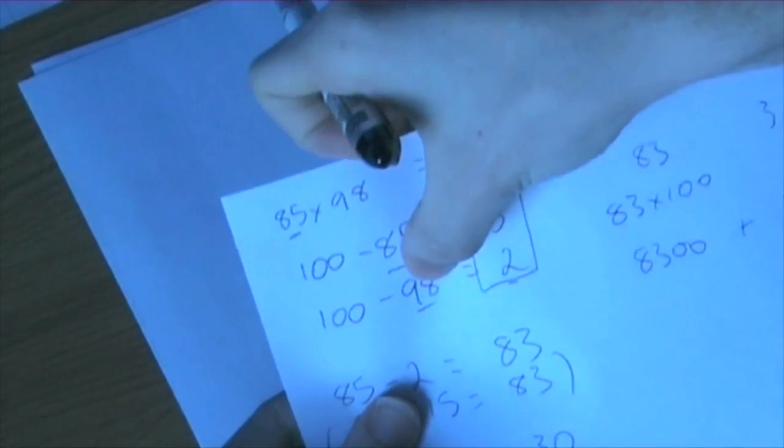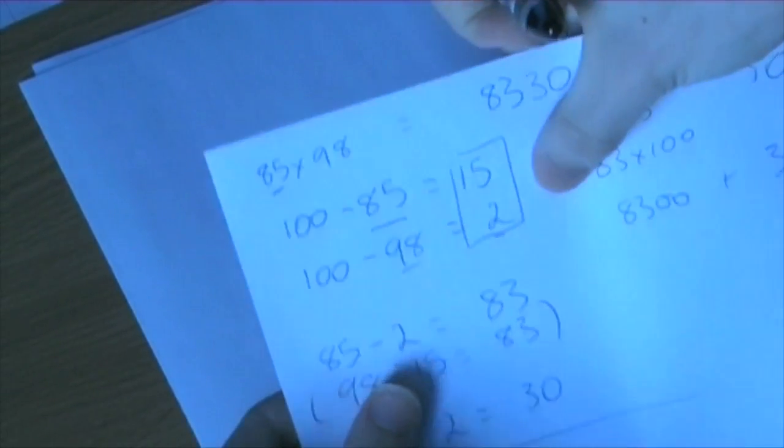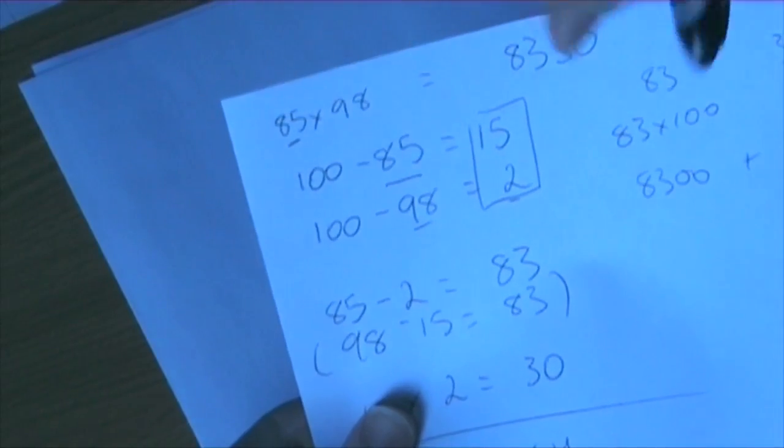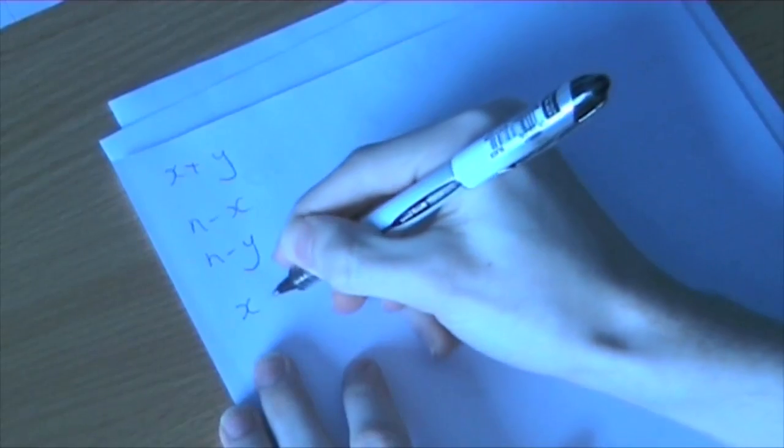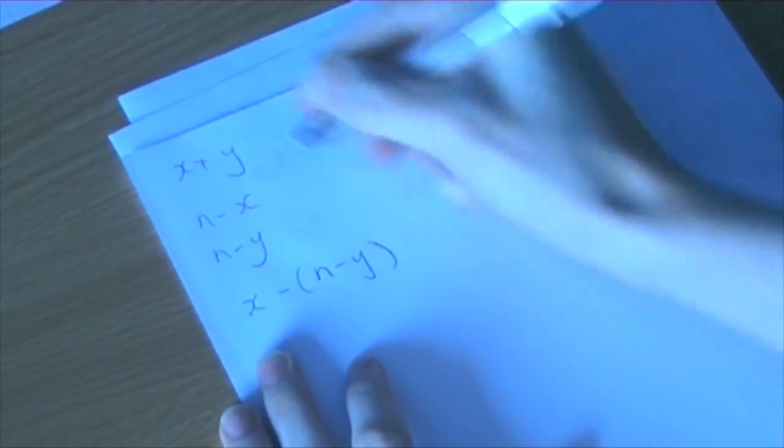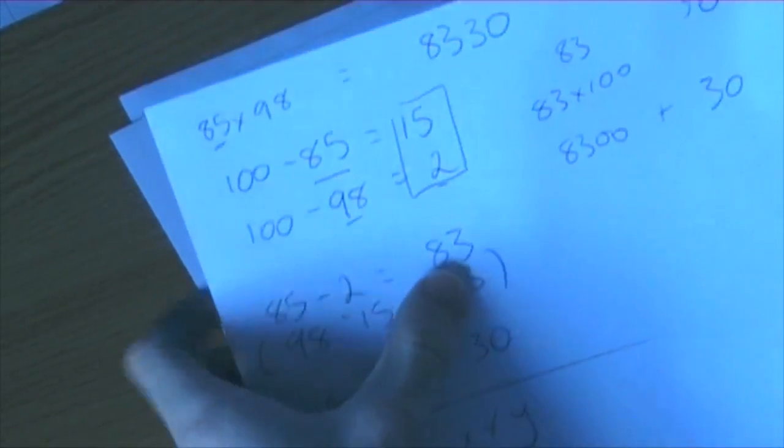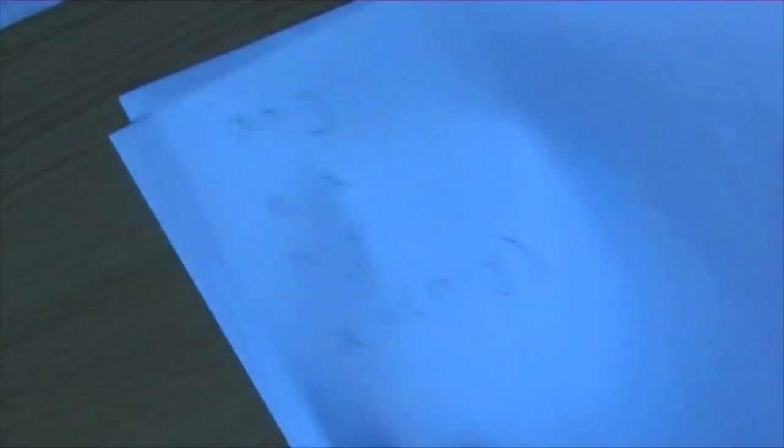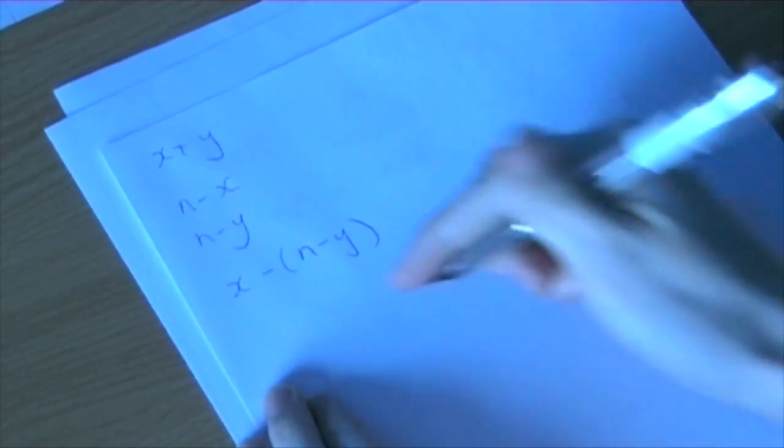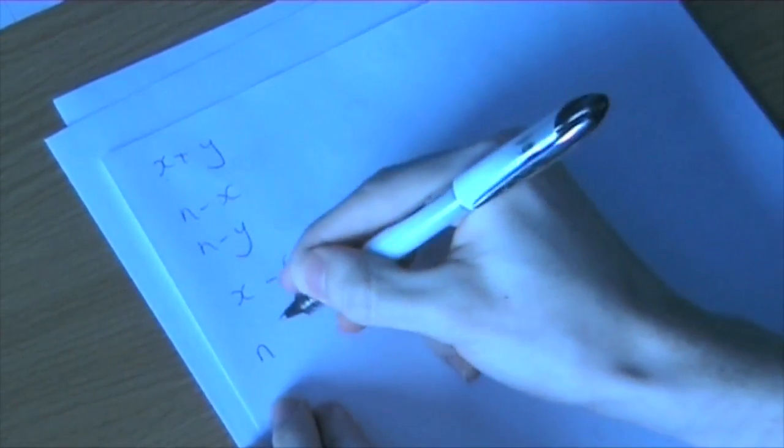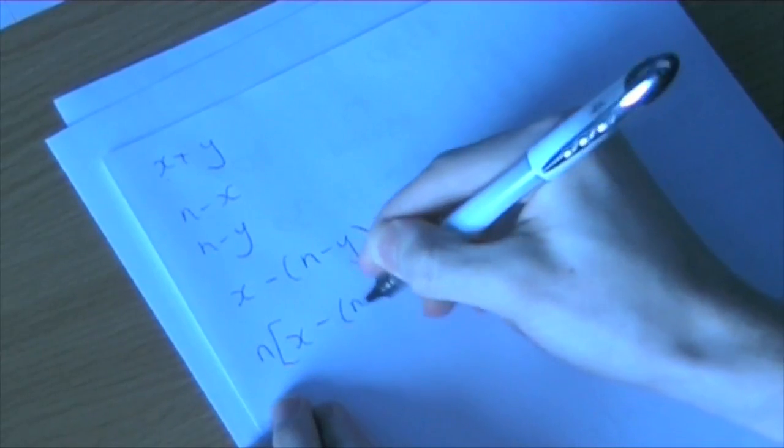Let us go back to the original one. We've just done that and then that, the two subtractions, to get 15 times 2. So next thing, we're going to take the first number and subtract the second subtraction from it. So we get x subtract (n minus y), first number, second subtraction. And that gets us the 83. Now we've multiplied that by 100. So in this case, we're multiplying it by n. So we get n multiplied by (x minus (n minus y)).